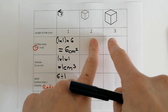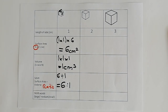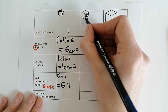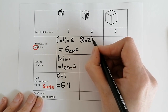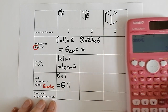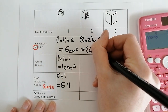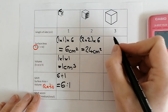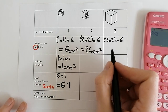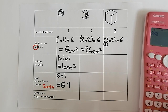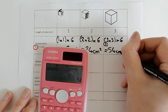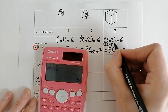For cubes two and three I'm going to do surface area for both, then volume for both, then surface area to volume ratio for both, so you can see the patterns. The two centimetre cube has a surface area of two by two — there are six of them — so two by two equals four, times six gives us 24 centimetres squared. For the three centimetre cube, three by three gives us nine, and nine times six gives us 54 centimetres squared.